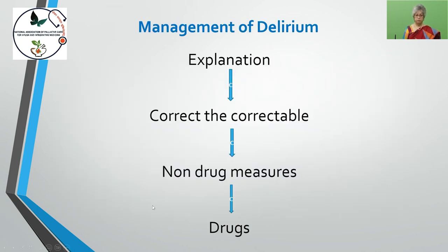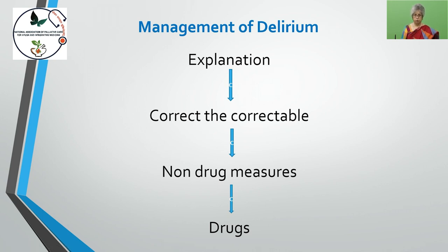Management of delirium involves explanation to the patient and caregiver, correcting the correctable — hydration, electrolytes, nutrition, pain — and adjusting doses of pain medication. Many non-drug measures are to be taken: supporting the patient, not allowing them to sleep during daytime, keeping lights on at night time with minimum stimulation. A few drugs can also be given.